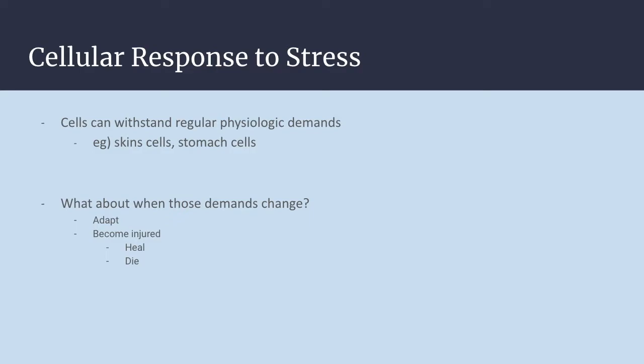Given time, there will be two outcomes. The cell can either heal and return to normal — a reversible injury — typically if the stimulus is removed, or the cell will undergo irreversible injury and die. A good example is skin cells exposed to too much UV radiation: normally you get a tan, which is an adaptation that fades over time, but too much sun too quickly causes a burn, and if severe, blistering where the skin falls off.